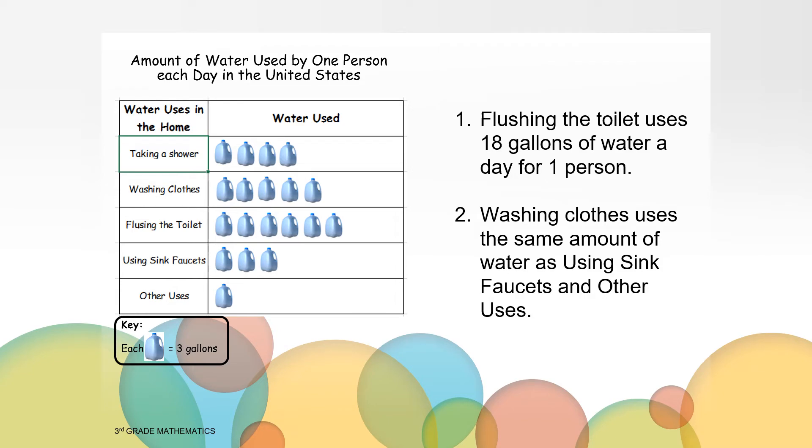Let's talk about the first statement. If you count the number of pictures in the pictograph related to flushing the toilet, you count six pictures. But since each picture represents three gallons of water, you need to multiply six times three to get the answer of 18. So statement number one is true.